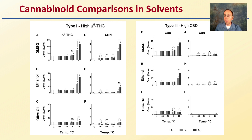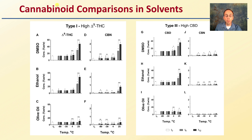Looking at cannabinoids in solvents — they also looked at how to store cannabinoids in DMSO, a very common solvent used in scientific laboratories, ethanol, and olive oil. There is a clear change at different temperatures at time zero, T6, and T12 — six months and then one year. The general take-home message for both THC and CBD is that olive oil seemed to have the least amount of breakdown compared to DMSO or ethanol, particularly at 25 degrees Celsius.